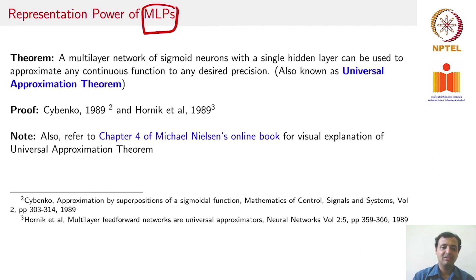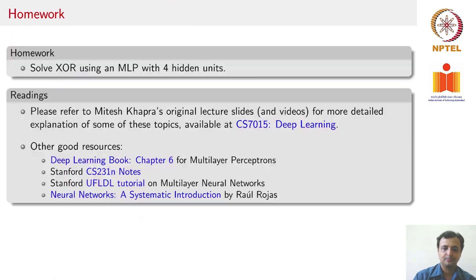We are not going to formally prove it here. If you are interested, these papers cited here are good pointers to the proof. There is also a very nice visual explanation in chapter 4 of Michael Nielsen's online book on neural networks and deep learning. Your homework for this lecture is to try to solve XOR using a multi-layer perceptron with four hidden units. This should help you understand the theorem about how any boolean function can be represented by an MLP with 2^n hidden units.